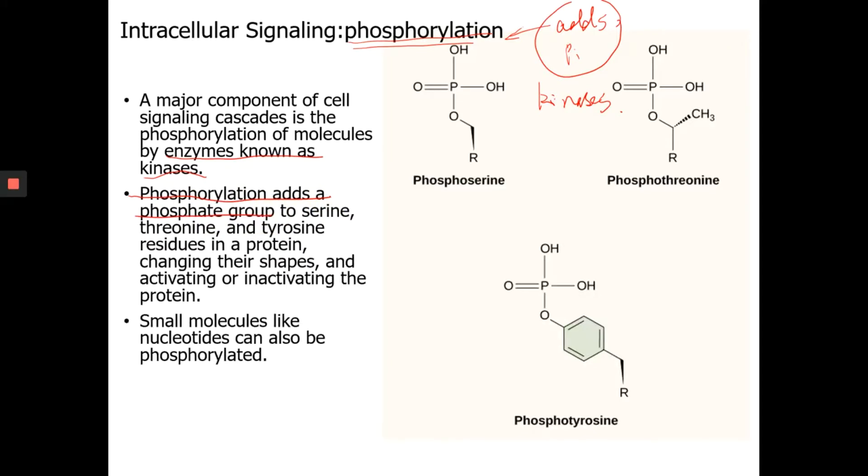Now phosphorylation usually happens to three amino acids: serine, threonine, and tyrosine. When those amino acids are phosphorylated, they are going to change their shape, and this will usually activate or deactivate a protein. But most of the times, phosphorylation will activate the protein.